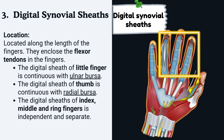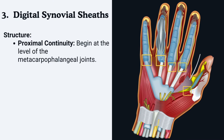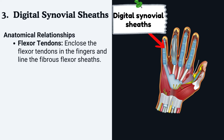The digital sheaths of the index, middle, and ring fingers are independent and separate structures. Proximally, they begin at the level of the metacarpophalangeal joint. Distally, they extend to the distal phalanges. Regarding anatomical relationships, they enclose the flexor tendons in the fingers and line the fibrous flexor sheaths.